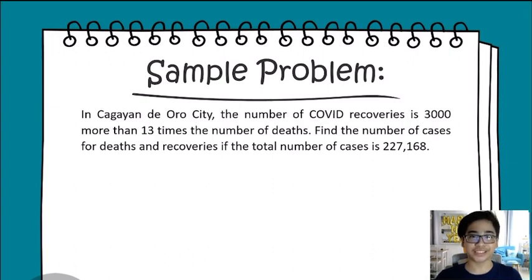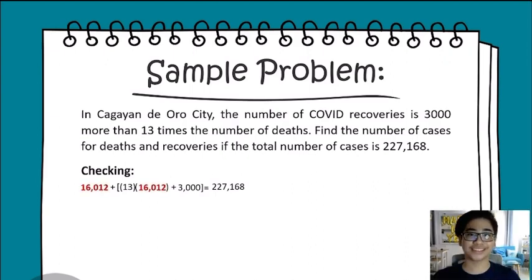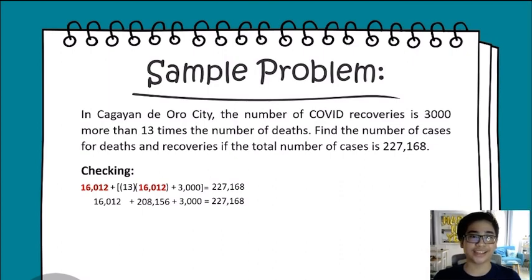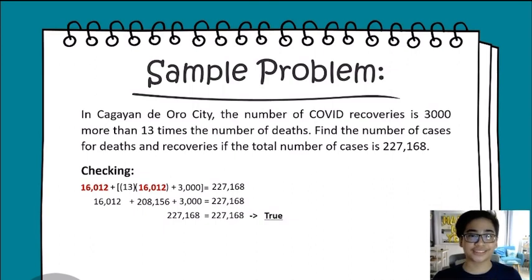To find out if the value of x is correct, we do the checking by substituting the value 16,012 for the variable x. We get the product of 13 and 16,012, which is 208,156, then copy the rest of the equation. The sum of 16,012, 208,156, and 3,000 is 227,168, which equals the value of the right side of the equation. Therefore, we can say that the value of x is correct.